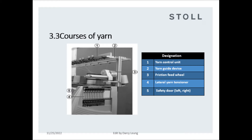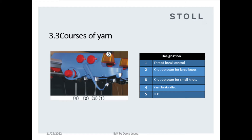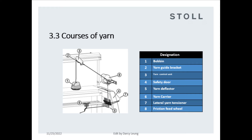Courses of yarn: 0.1 yarn control unit manages yarn tension, yarn break, and knots detector. 0.2 yarn guide device guides the yarn path. 0.3 friction feed wheel reduces yarn friction. 0.4 lateral yarn tension or yarn pulling when feeder returns. 0.6 safety door left and right. Yarn control unit components: 0.1 thread break control, 0.2 knot detector for large knots, 0.3 knot detector for small knots, 0.4 yarn break disc, 0.5 LED light.